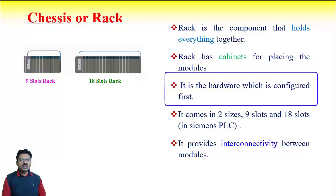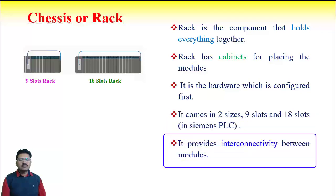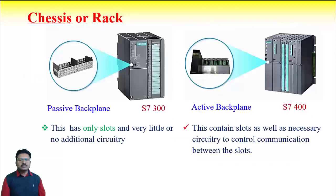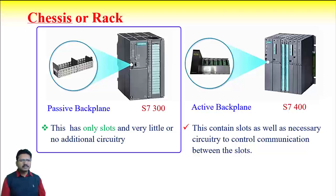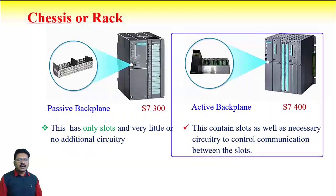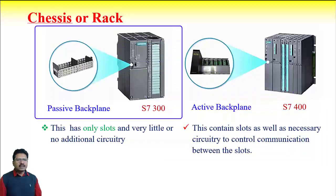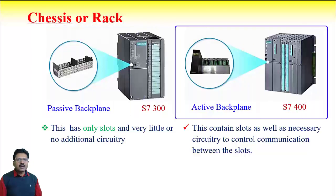At the start of PLC use we must configure the hardware, and the rack is normally configured first. In Siemens PLC it comes in two sizes: 9 slots and 18 slots. The rack or chassis provides interconnectivity between different modules. There are mainly two types of racks: passive backplane and active backplane. A passive backplane has only slots with very little or no additional circuitry, whereas an active backplane contains slots as well as necessary circuitry to control communications between the slots. For example, the S7300 has a passive backplane chassis and the S7400 has an active backplane chassis.